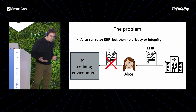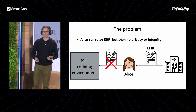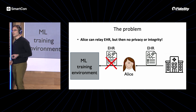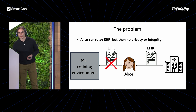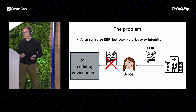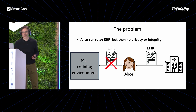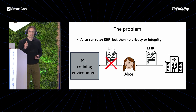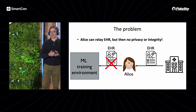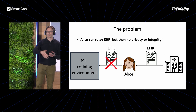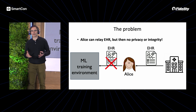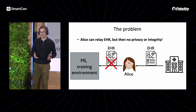What Alice can do, of course, is just download her electronic health record and upload it to the training environment. But if she does that, two problems ensue. First, there's the problem of privacy: Alice is sending it into this environment, but she has no idea whether her electronic record will be protected there.